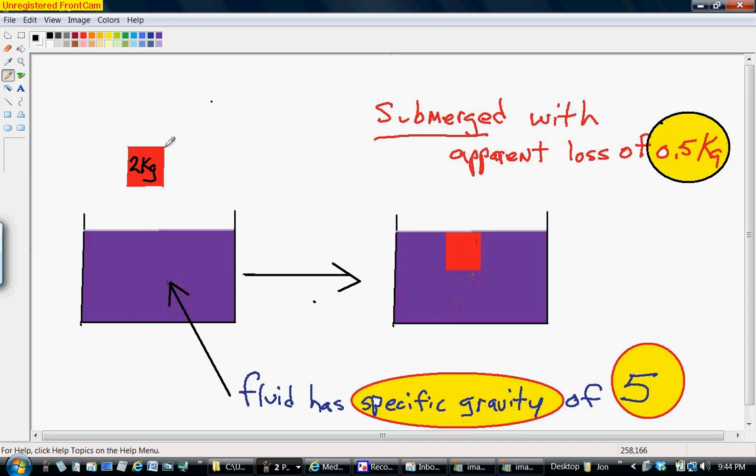We have a two kilogram object and we have a solution that's not water. It's got a specific gravity, they say, of five. And this object is submerged with an apparent loss of 0.5 kilograms. So this is the way I see it.